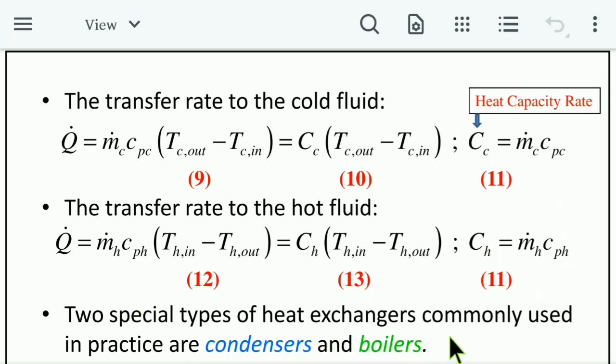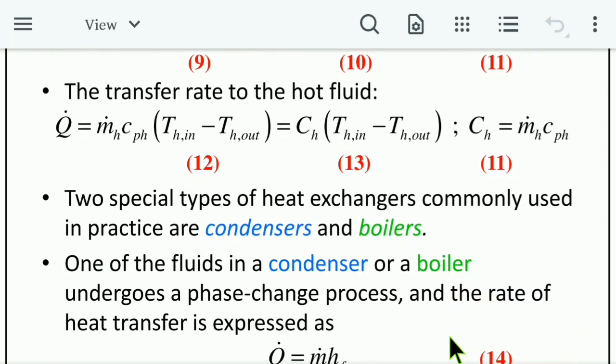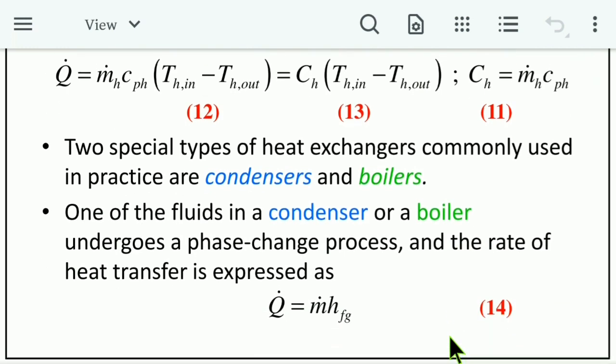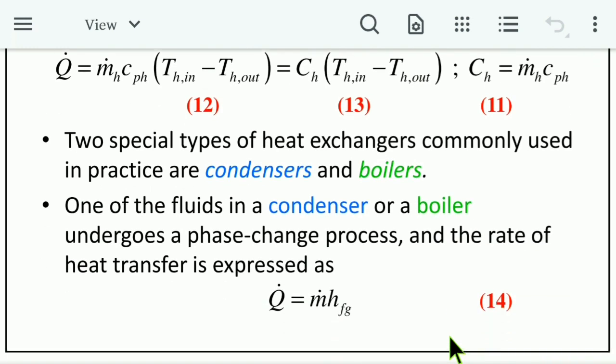Two special types of heat exchangers commonly used in practice are condensers and boilers. In a condenser or boiler, one of the fluids undergoes a phase change process, and the rate of heat transfer is expressed as Q̇ = ṁ · h_fg (Equation 14).